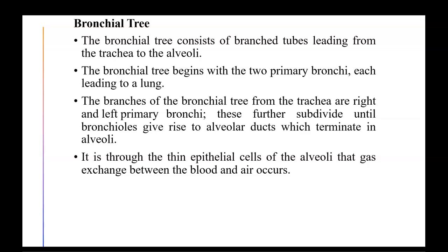The bronchial tree consists of branching tubes leading from the trachea to the alveoli, beginning with two primary bronchi each leading to a lung. These branch into bronchioles, which give rise to alveolar ducts that terminate in the alveoli. Gas exchange occurs through the thin epithelial cells of the alveoli at the respiratory membrane — oxygen enters the bloodstream while carbon dioxide is released to be exhaled.